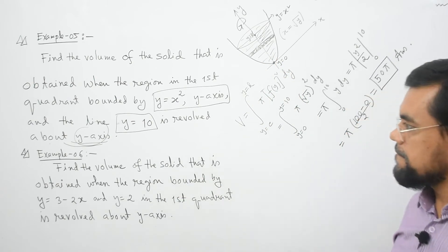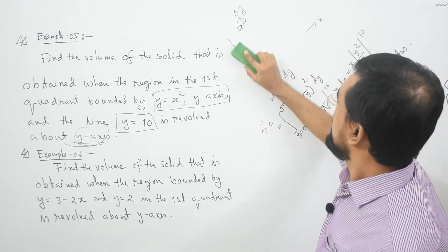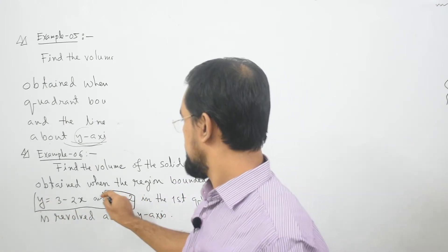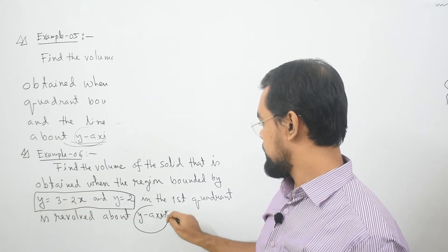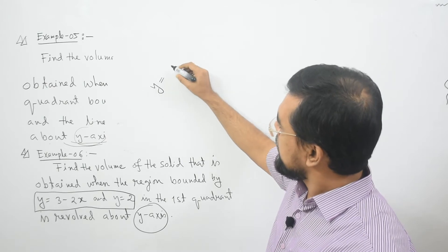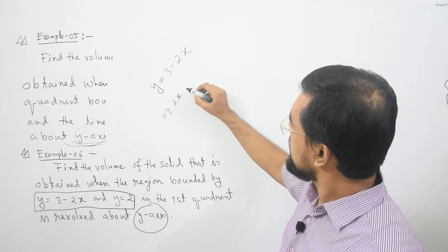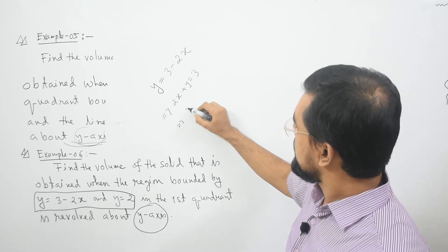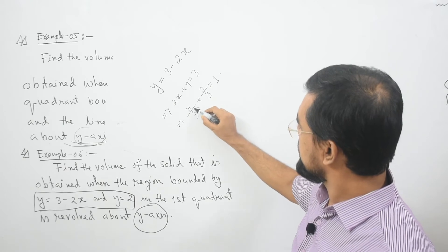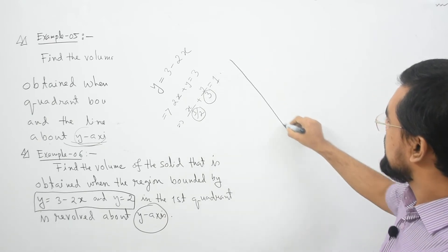And how about example 6? It says find the volume of the solid that is obtained when the region bounded by y equal to 3 minus 2x and y equal to 2 in the first quadrant is revolved about the y-axis. So let us try to sketch the first one. It is a straight line since it is a linear equation. We can graph it by writing 2x plus y equal to 3, which implies x over (3/2) plus y over 3 equal to 1. So this is our x-intercept and this one is our y-intercept.